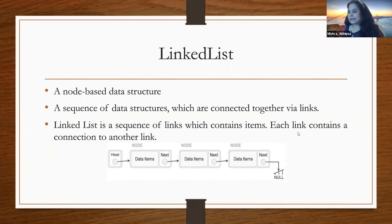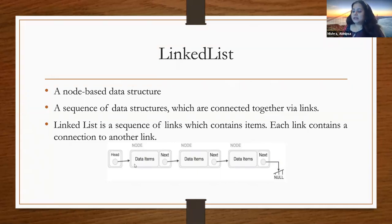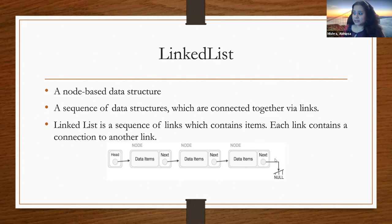Moving on to linked list. A linked list is a node-based data structure. It is represented by a series of nodes connected by links, which are nothing but pointers. A node consists of two parts: data and a pointer to another node. These are a sequence of nodes connected by links. A linked list has a head, which points to the beginning node, and the last node in the list points to null — denoting the end of the list.